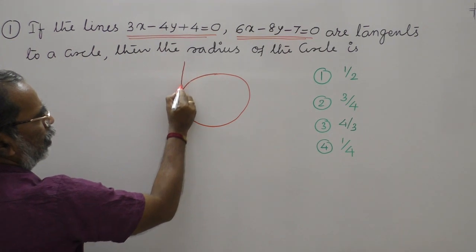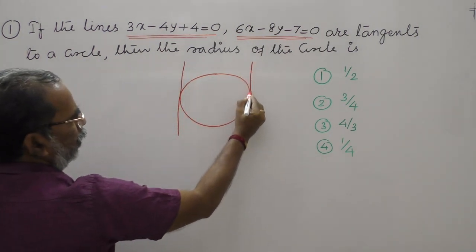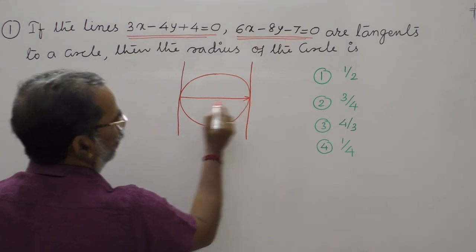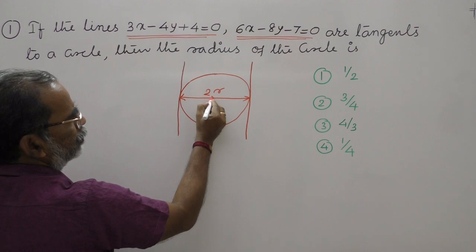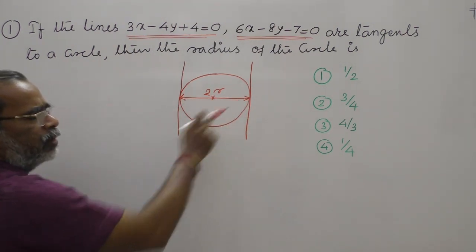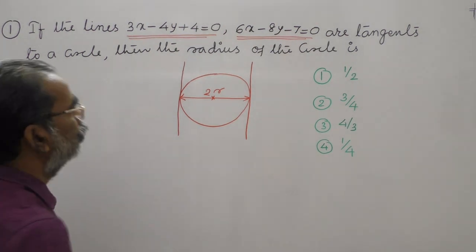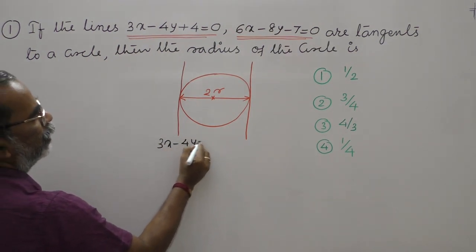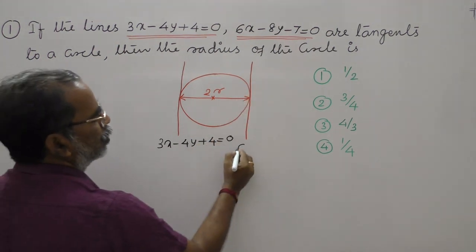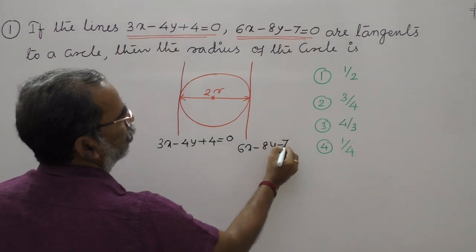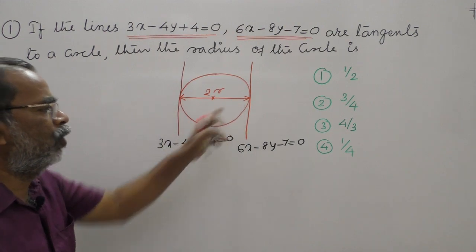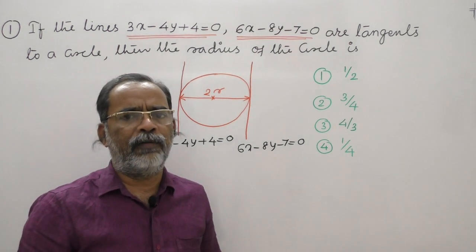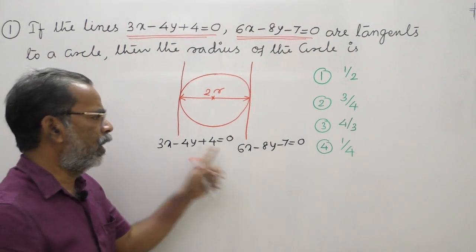Therefore I shall take a figure. This is the given circle. These two lines are tangents and they are clearly parallel lines, so they will be like this. This will be the diameter of the circle — double the radius. The distance between the lines will be the diameter. The first line is three x minus four y plus four equals zero and the second line is six x minus eight y minus seven equals zero. We will calculate the distance between these two lines — that will be the diameter, and half of diameter is the radius.